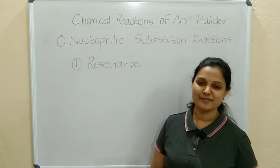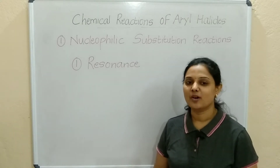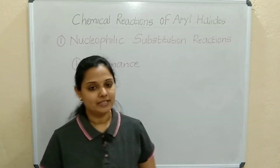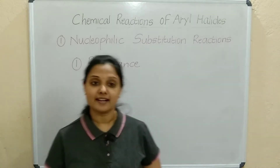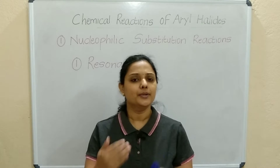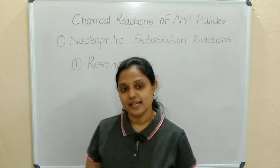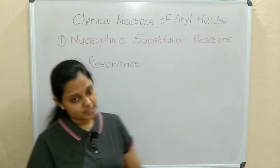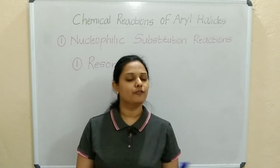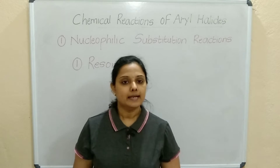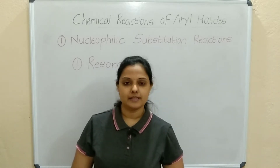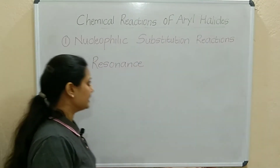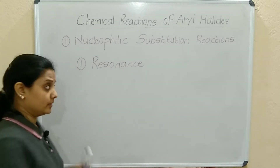Welcome to our magic tutorials for chemistry. Last time we started with the organic chemistry haloalkanes and haloarenes chapter, so we'll continue the topic today. We'll discuss the chemical reactions of aryl halides — that is, a benzene ring with a halogen attached to the ring. First, we will discuss nucleophilic substitution reactions, which means a nucleophile will substitute a halogen. Aryl halides are less reactive towards nucleophilic substitution reactions, so let's check the reasons.